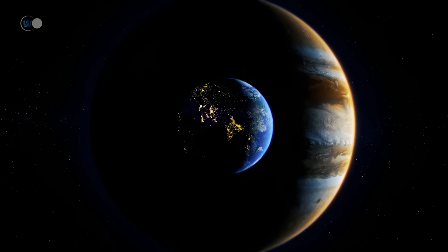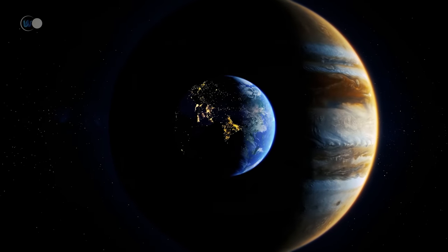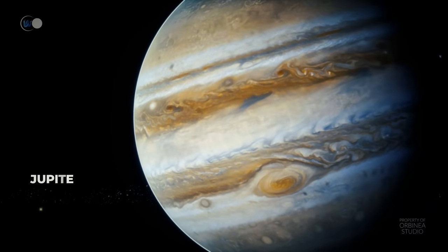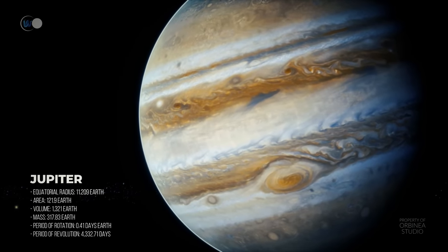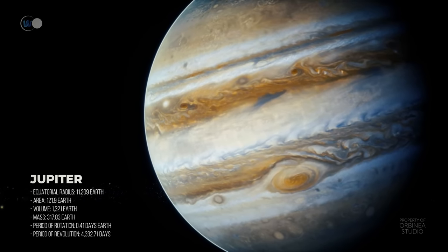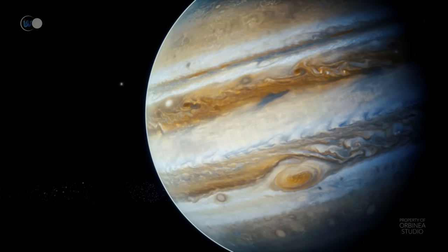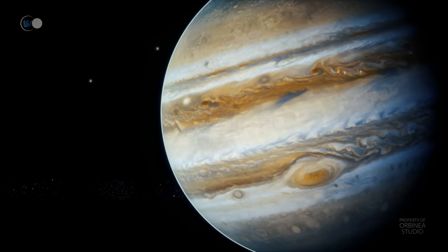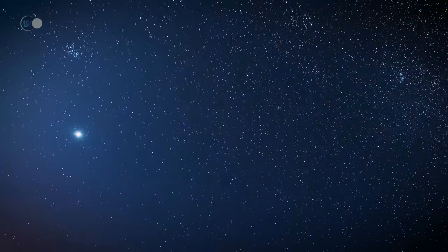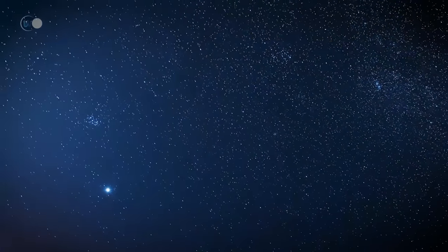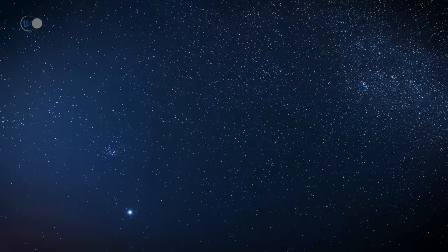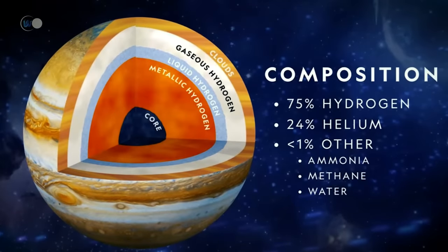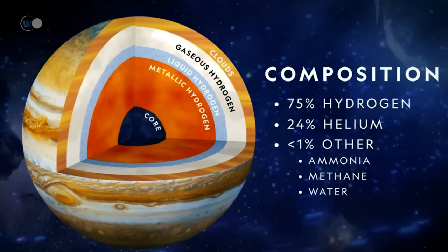Jupiter is the largest planet in the solar system. It could contain all the other planets in its interior. Its composition is almost entirely gaseous and consists mainly of hydrogen and helium. Jupiter is more like a star than a real planet. After Venus, Jupiter is the most luminous planet. It has a compact core of rock and ice formed of compressed hydrogen and helium. This core represents about 5% of its mass. It is enveloped by volatile elements.